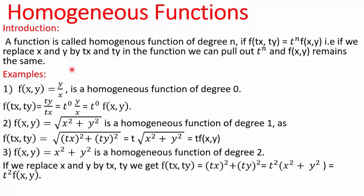This will be better explained using some examples. In the first example, we are given f(x,y) = y/x. If I replace y by ty and x by tx, t gets cancelled and we get y/x. Writing 1 as t to the power 0, we get t⁰ · f(x,y). As the power of t is 0, it's a homogeneous function of degree 0.